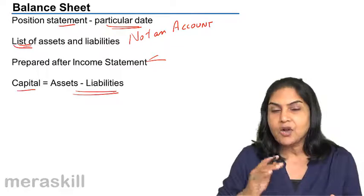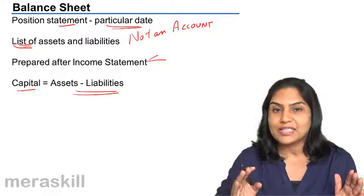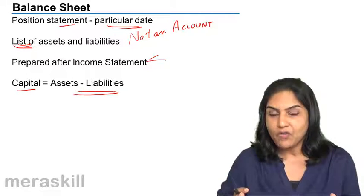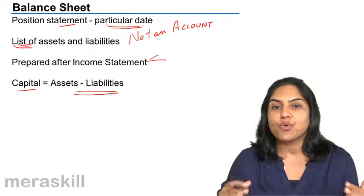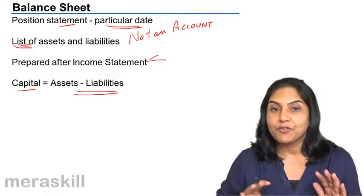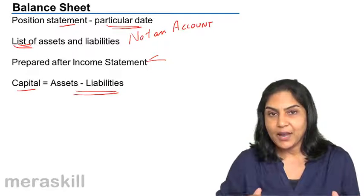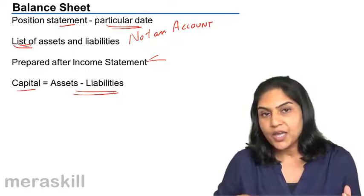And what are the liabilities? What the business owes. So, it's a statement which consists of the list of assets, what the business owns and what the business owes. The difference between the two is the capital, that which belongs to the proprietor.